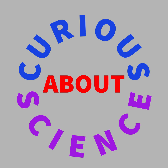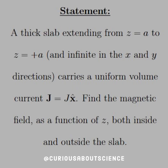Welcome back all. Last question we looked at the scenario where we had a wire; now we'll look at the scenario where we have a slab. The statement reads: a thick slab extending from z equal negative a to z equal positive a, infinite in the x and y directions, carries a uniform volume current j equal to j x-hat. Find the magnetic field as a function of z, both inside and outside the slab.